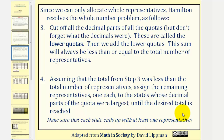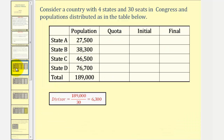Let's take a look at our first example. The first step is to find the divisor or standard divisor. We take the sum of the population from all the states, which is 189,000, and divide by the total seats in Congress, which is 30. Notice how this gives us a divisor of 6,300.